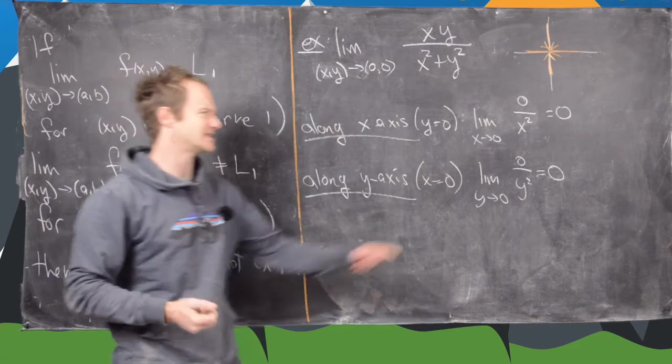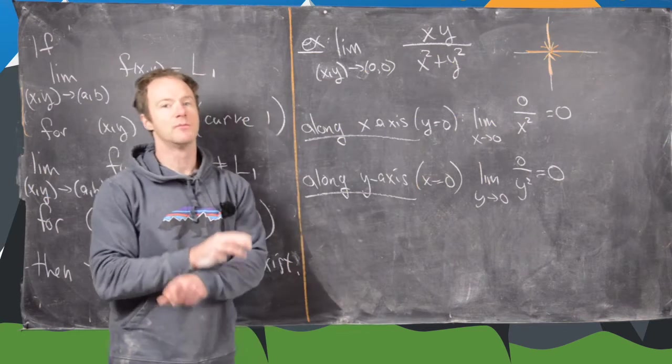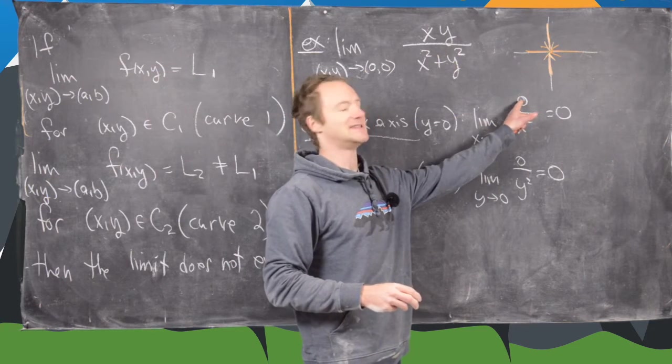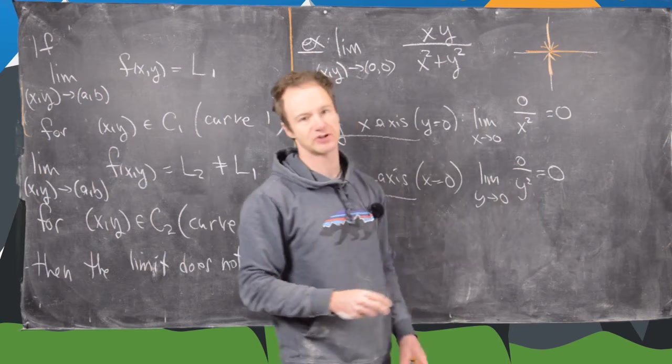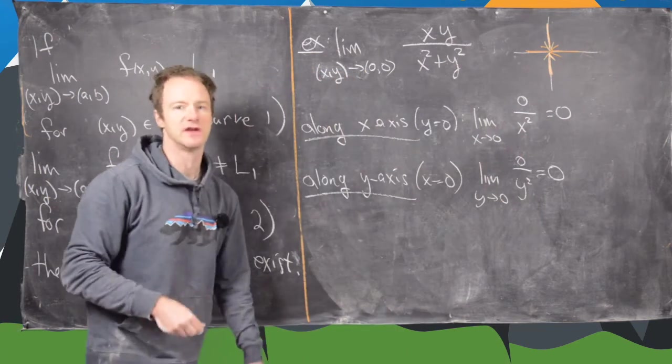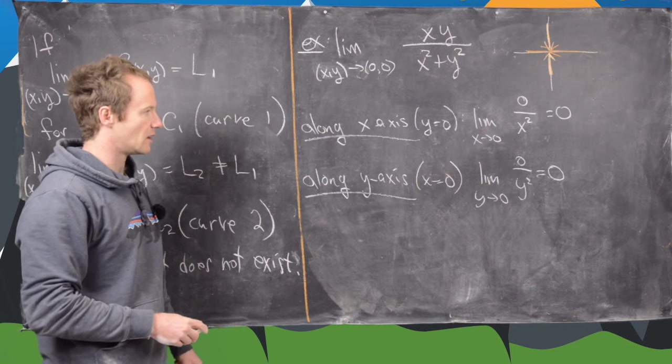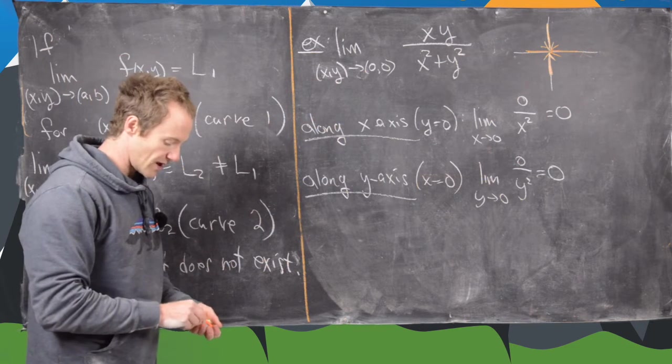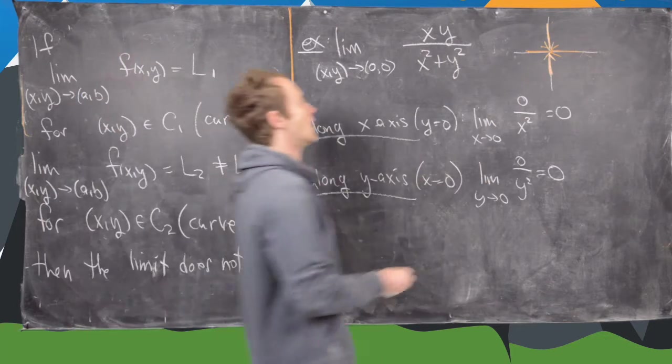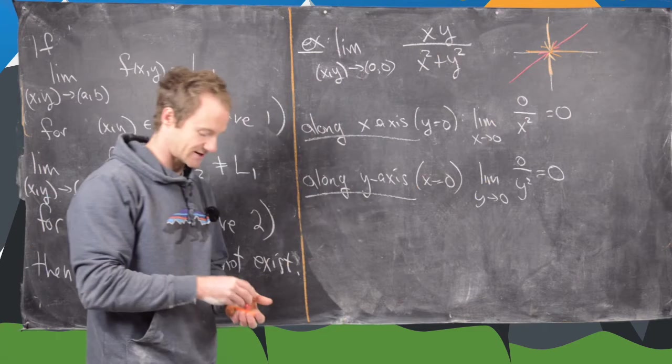Now you might say, is this an indeterminate form because I have zero over something that's going to zero? But it's not because this zero is identically zero, but this is just approaching zero. So in fact, the cancellation happens before you take the limit. Now maybe we need to go in along another curve, but we're not restricted to the axes.